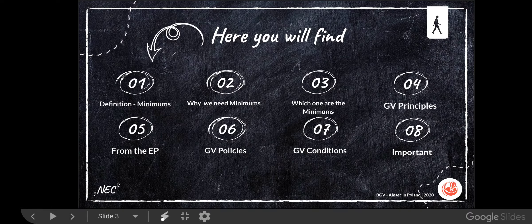Here's the agenda for today. First I'm going to talk about the definition of the minimums — what they are — and later explain why we need them. I'll show a couple of examples in part 3 of the GV minimums that we have in AIESEC. After that we're going to do the same with the GV principles: definition, purpose, and examples. You can distinguish types of principles — towards the ICX, towards the OGX, and towards the EP. Afterwards we'll go to policies, then conditions. Part 8 is called 'important,' which means it's just reminders for you.